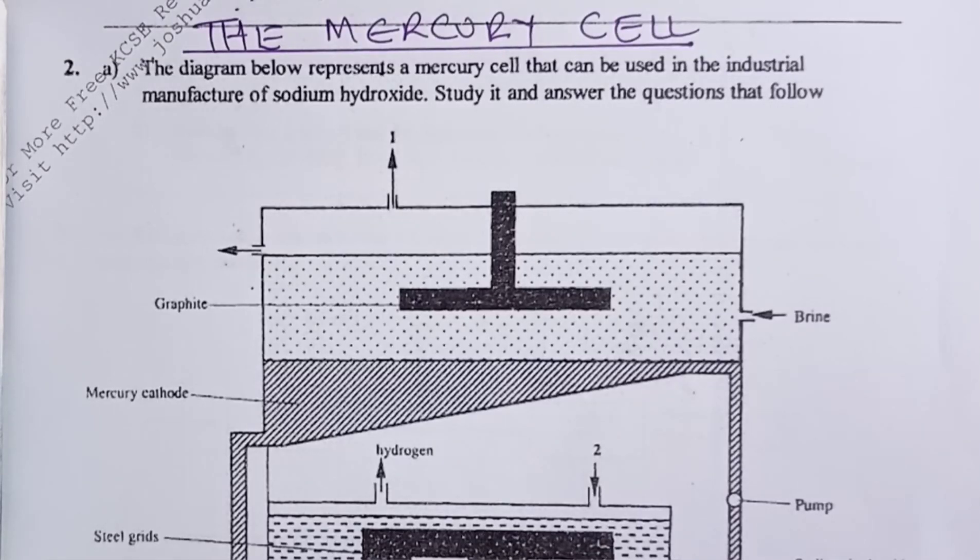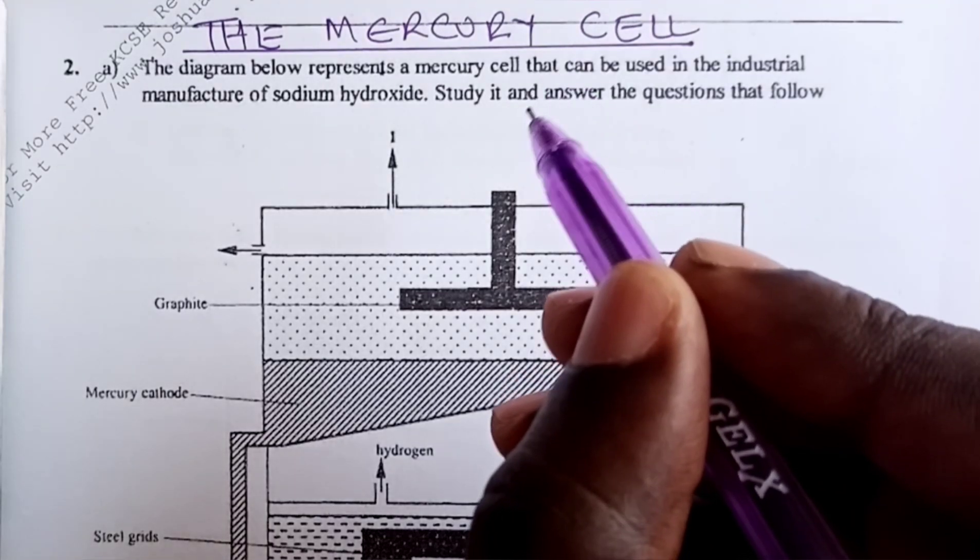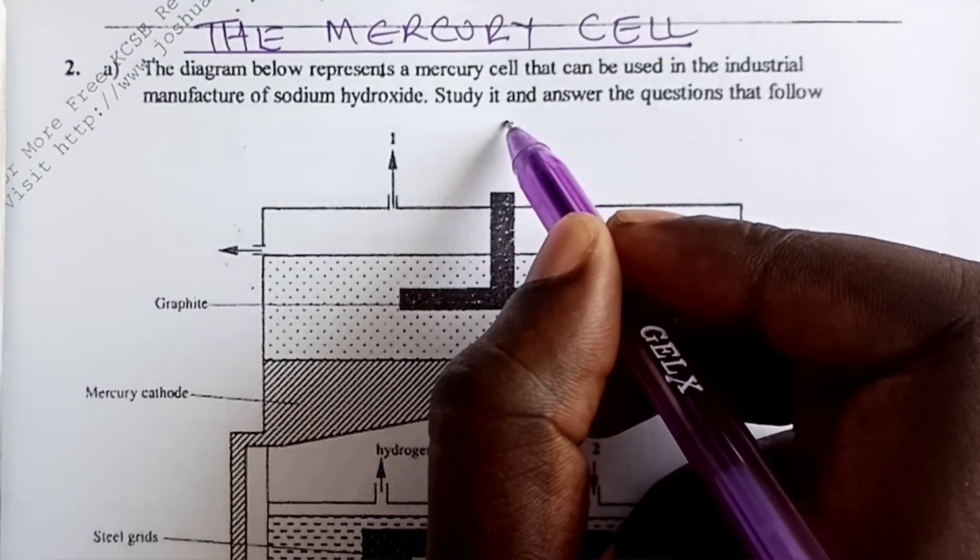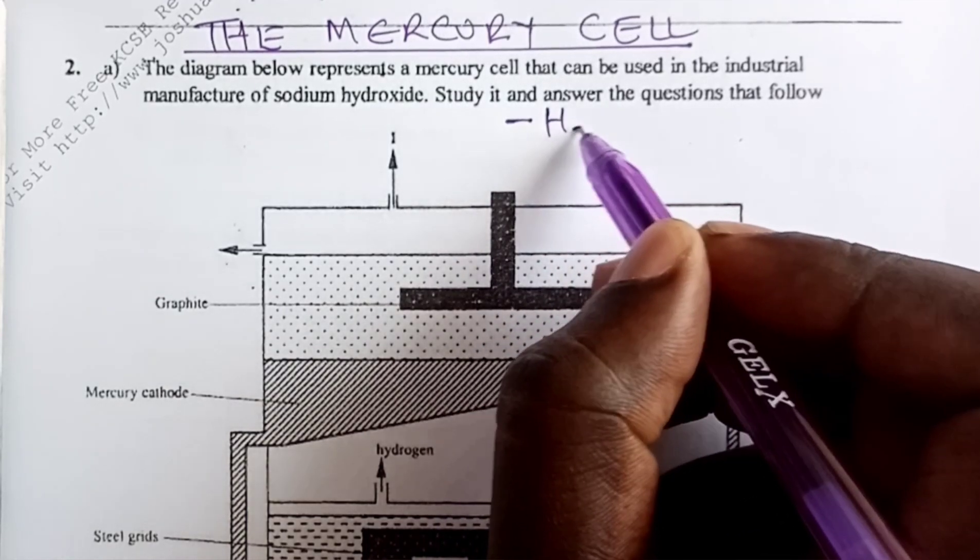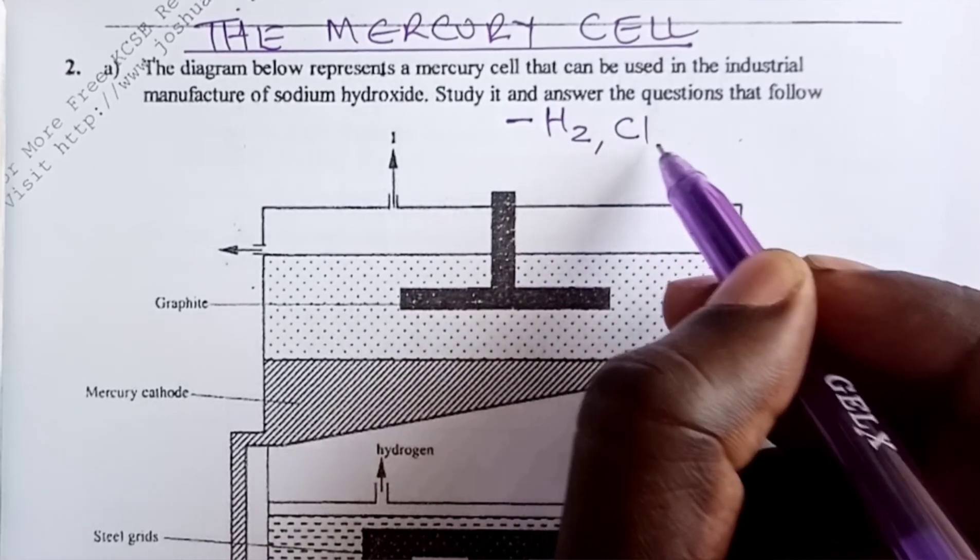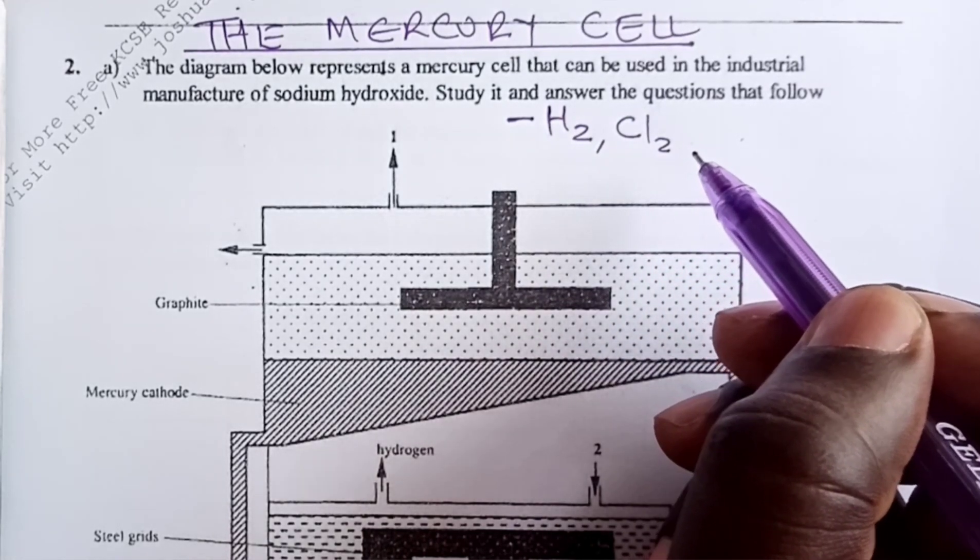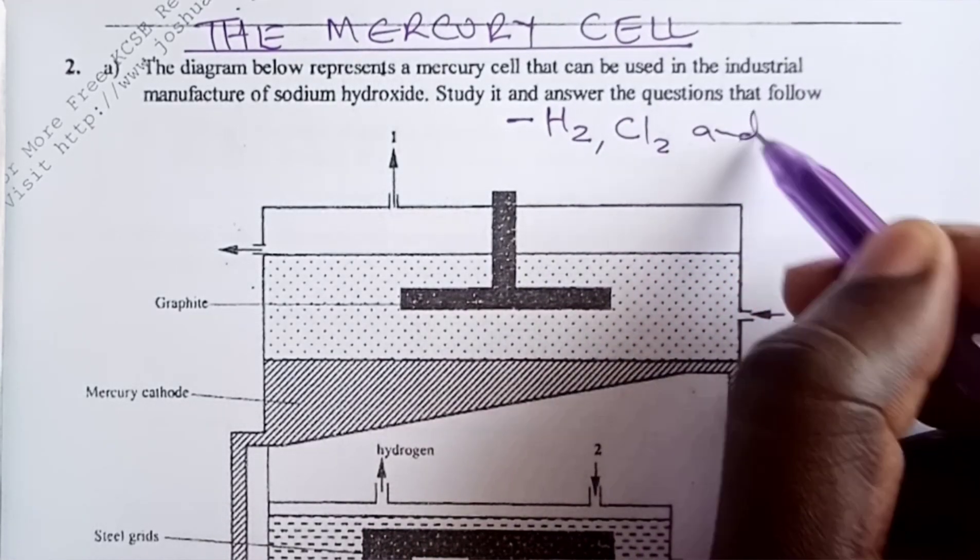Greetings once again, the mercury cell. Mercury cell is another cell that produces hydrogen gas, chlorine gas, and sodium hydroxide.